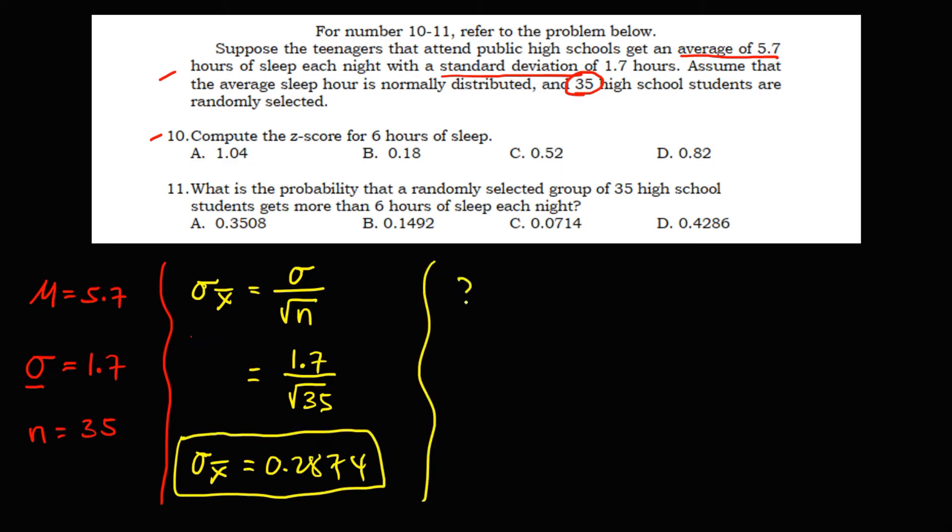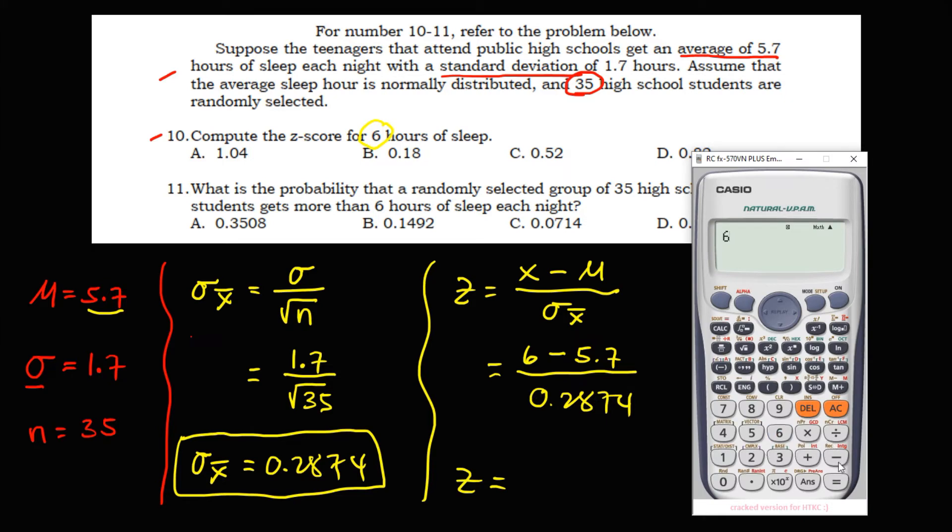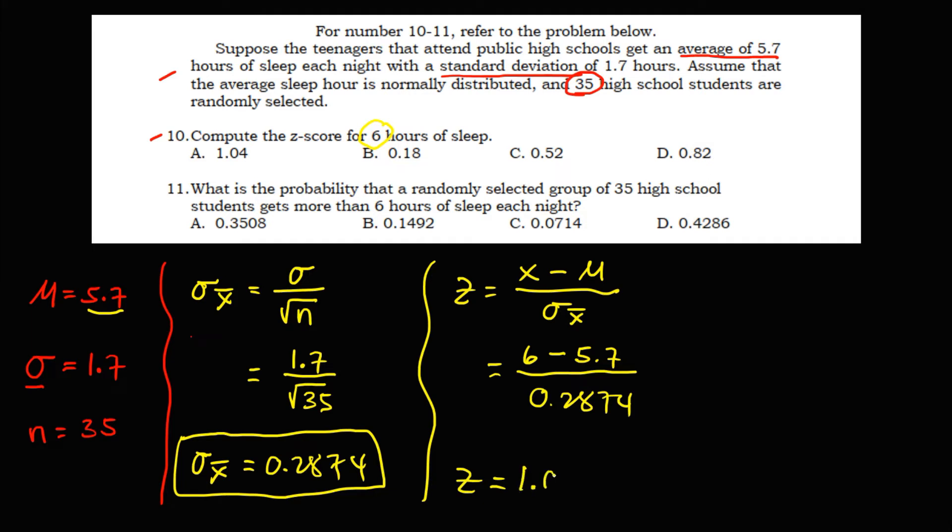Then to solve for the Z-score, that's the X-value minus the mean over the sample standard deviation. So the X-value, that's the 6 hours of sleep. We have 6 minus the mean, so that's 5.7 over the sample standard deviation, that's 0.2874. So we have 6 minus 5.7 equals, then divide 0.2874 equals, so that's 1.04. So Z-score is 1.04.